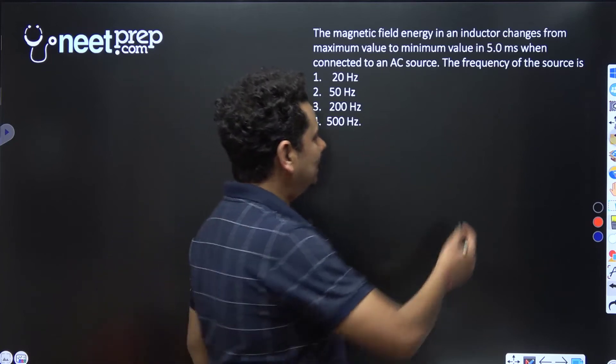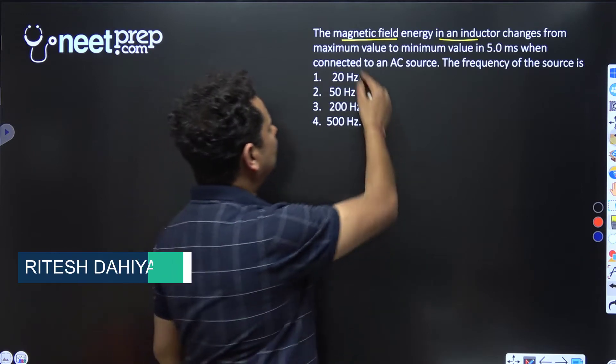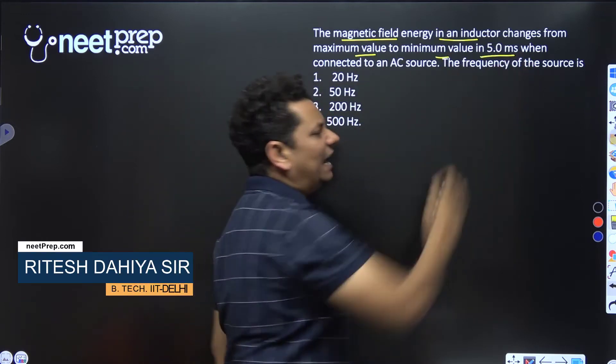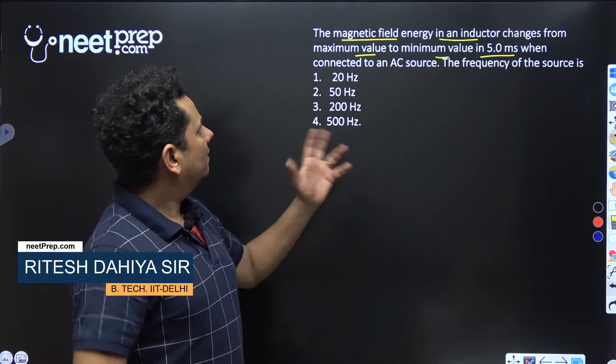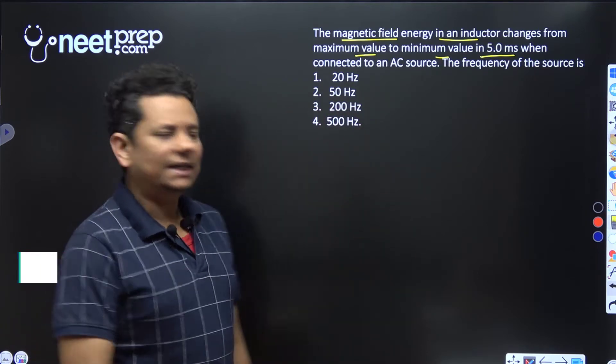The next question says: the magnetic field energy in an inductor changes from maximum value to minimum value in five milliseconds when connected to an AC source. The frequency of the source is: